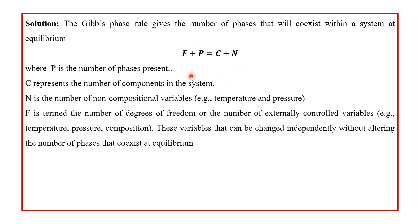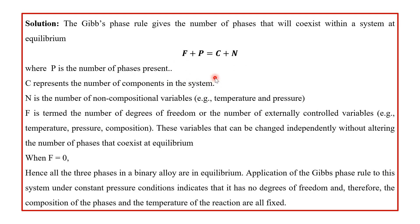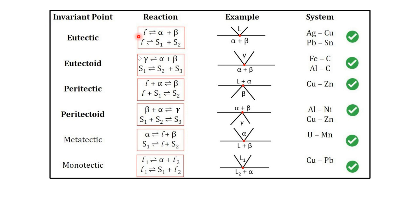The degrees of freedom represent the number of externally controlled variables that can be changed independently without altering the number of phases in equilibrium. When F = 0, we cannot change any variable in the system because any change will produce a new phase. For a binary alloy — a two-component system — the maximum number of phases allowed in equilibrium is 3, and all three phases exist in equilibrium at that particular invariant point.